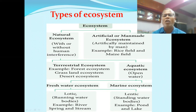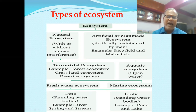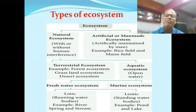Freshwater ecosystem is of two types: lentic and lotic. Lentic means standing water bodies — ponds and lakes come under lentic ecosystem. Lotic ecosystem includes running water bodies such as rivers, springs, and streams.